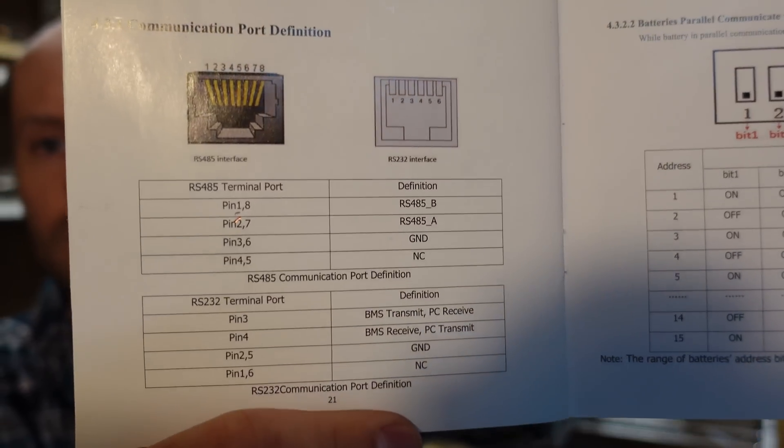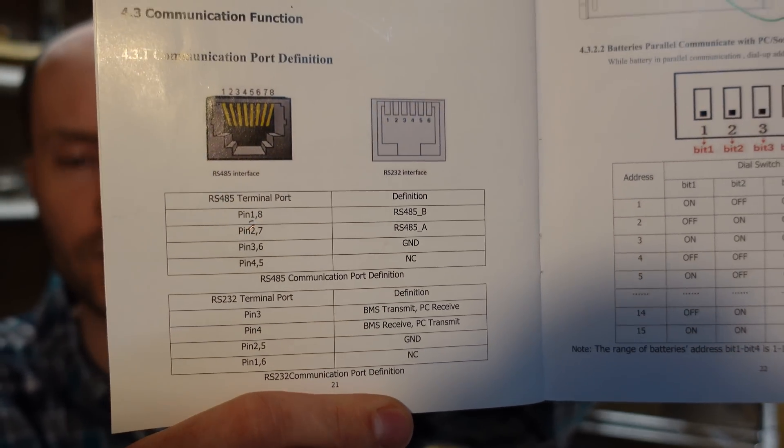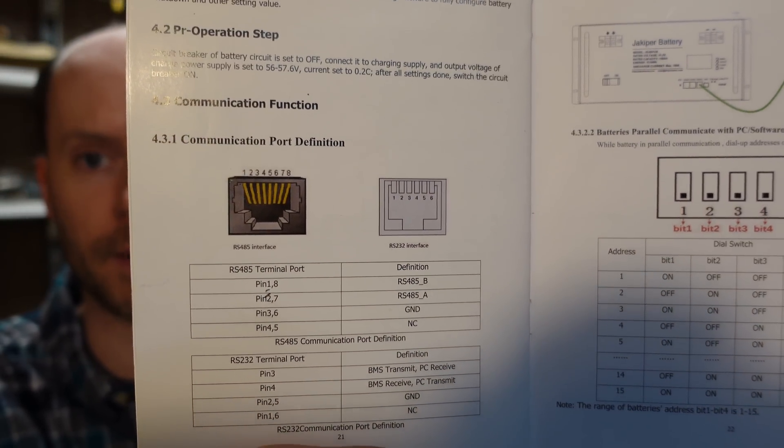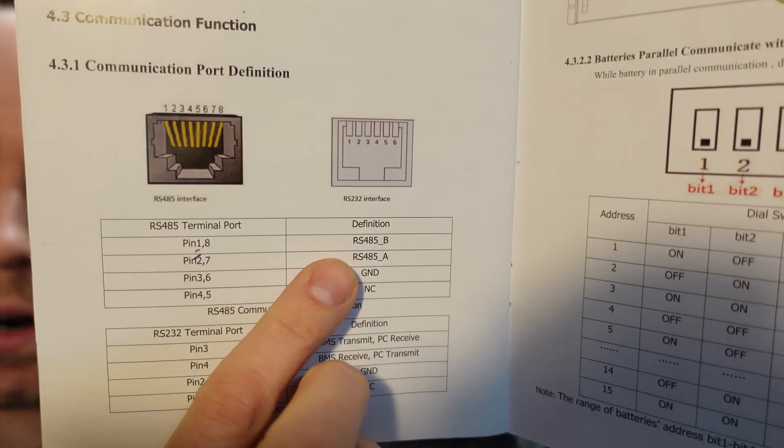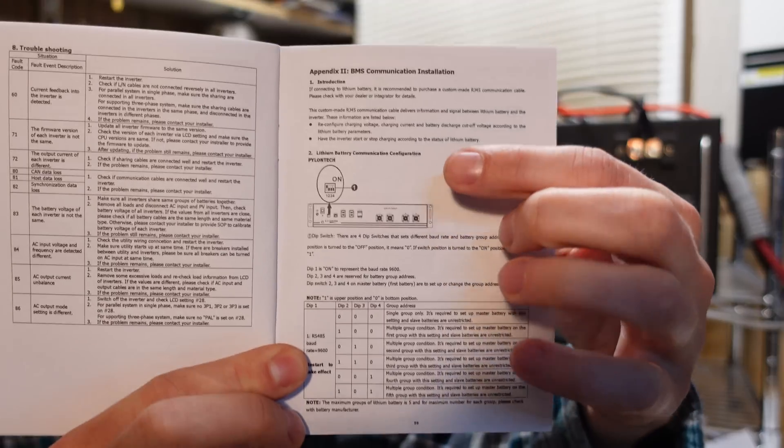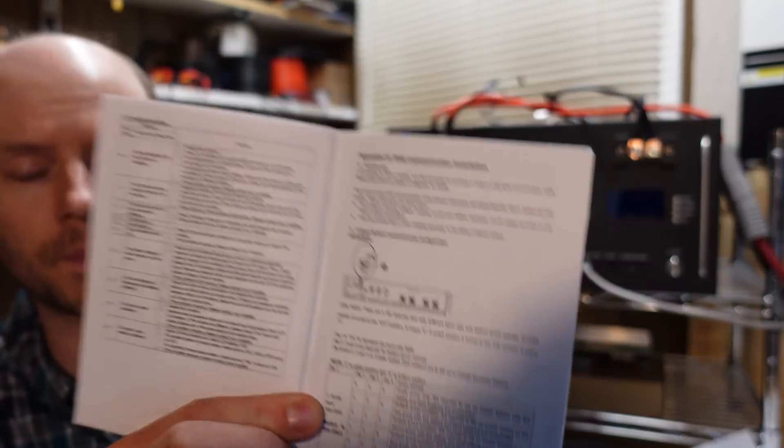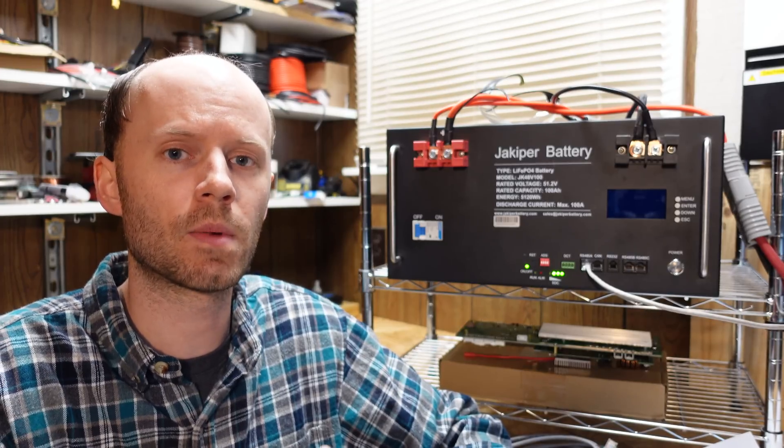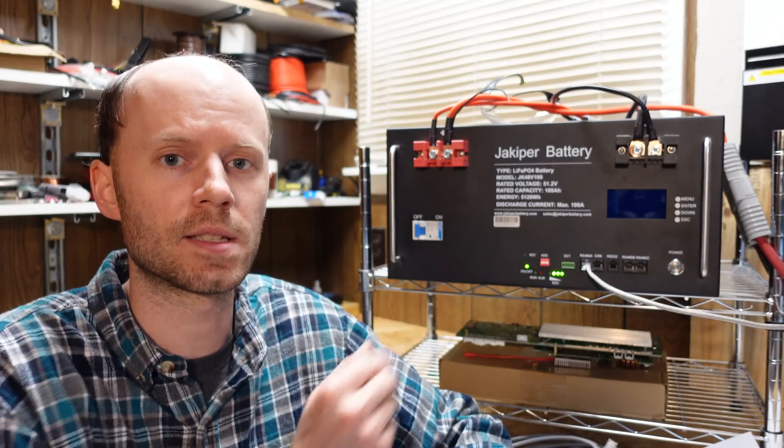So the Jakoper user's manual provides pinout information on the RS-485 port of this battery. So we can see which pins we need for RS-485 A and B. Now the manual for the MPP solar inverter does not make any mention of the pin assignments on the BMS connector. Their user's manual has an appendix for this. However, it's very specific to certain brand and model of battery, which I assume are the ones MPP solar has actually tested with their inverter.